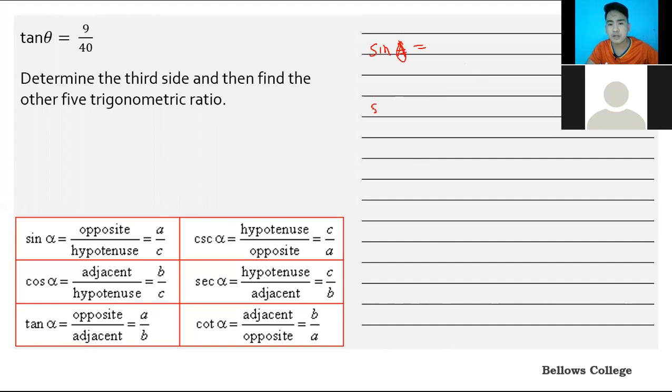Write out sine theta, cosine theta, tangent theta—our tangent theta is 9 over 40—cosecant theta, secant theta, and cotangent theta. Theta stands for angle. We have to analyze the given. The ratio of tangent is opposite over adjacent. So this means 9 represents the opposite and 40 represents the adjacent. What's missing is the hypotenuse.